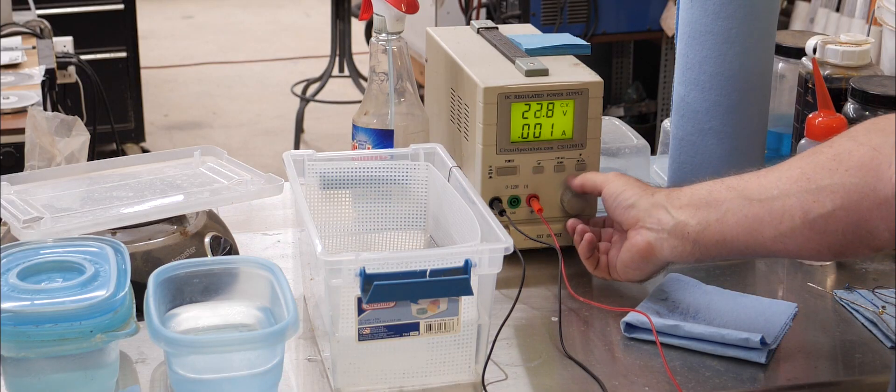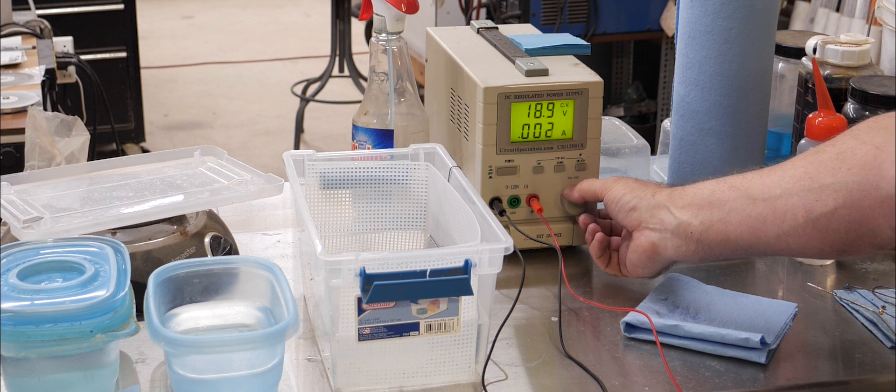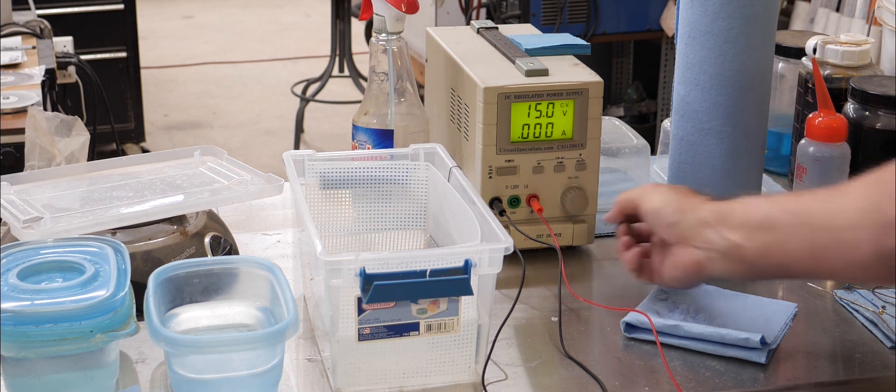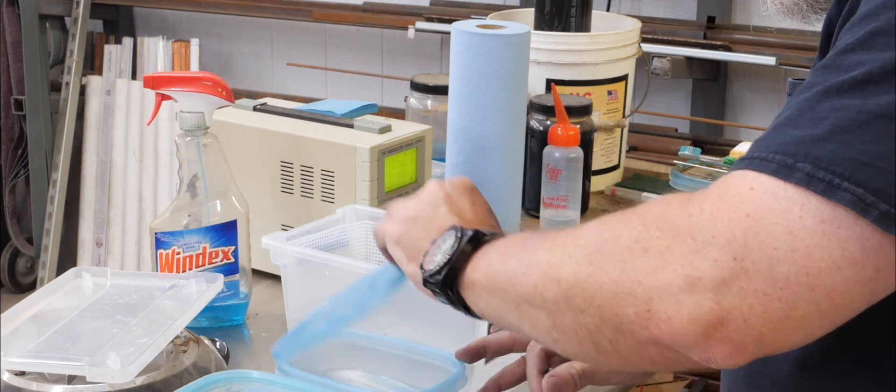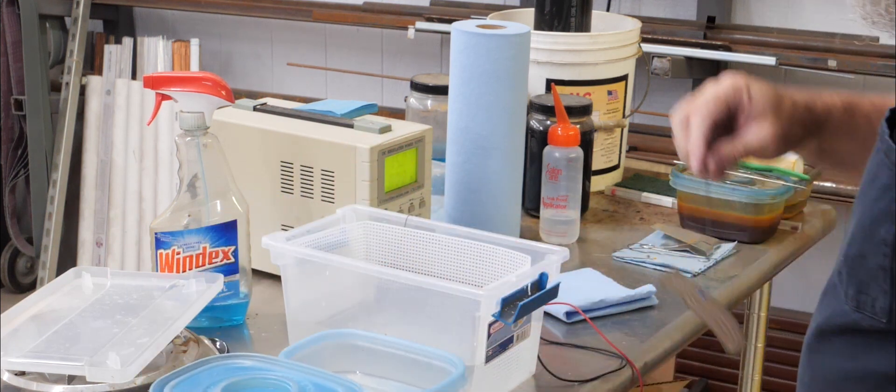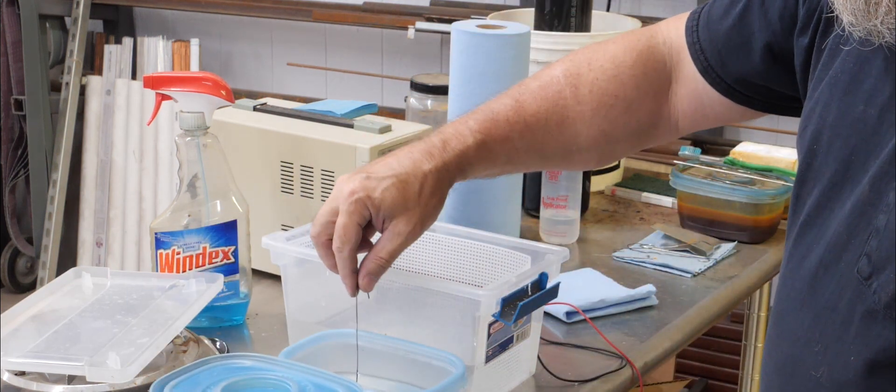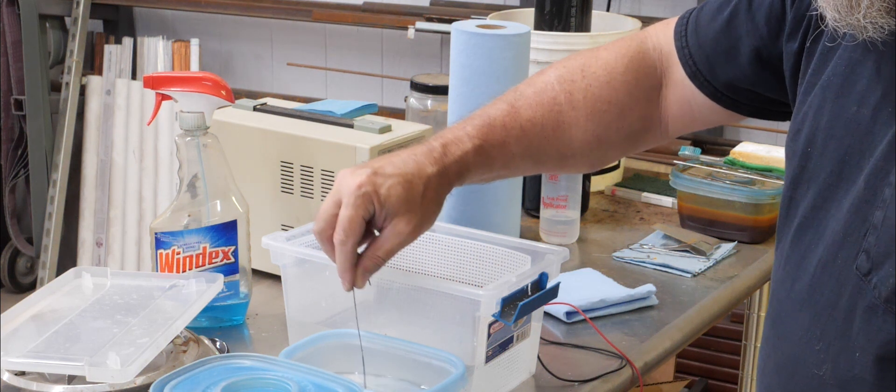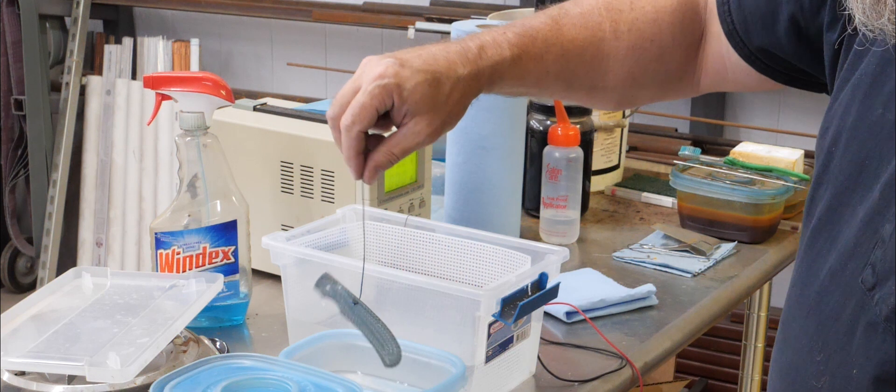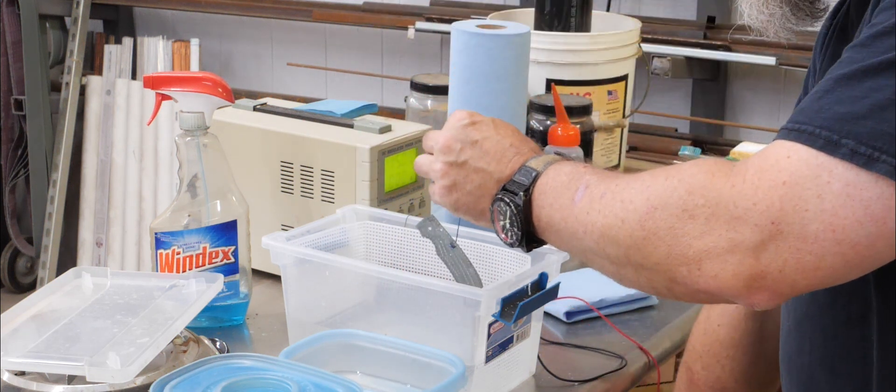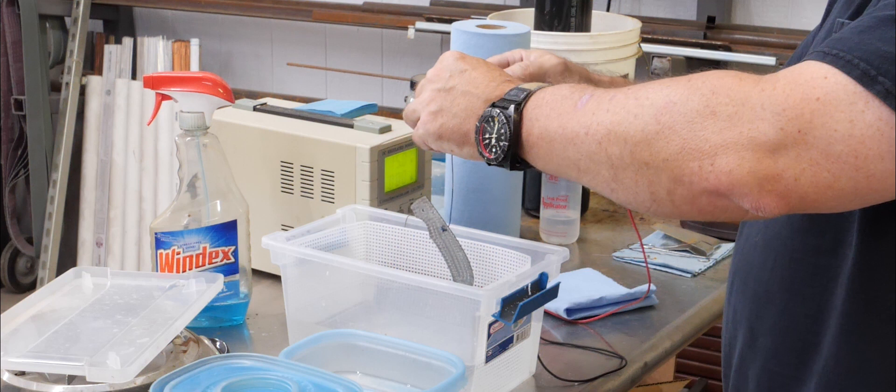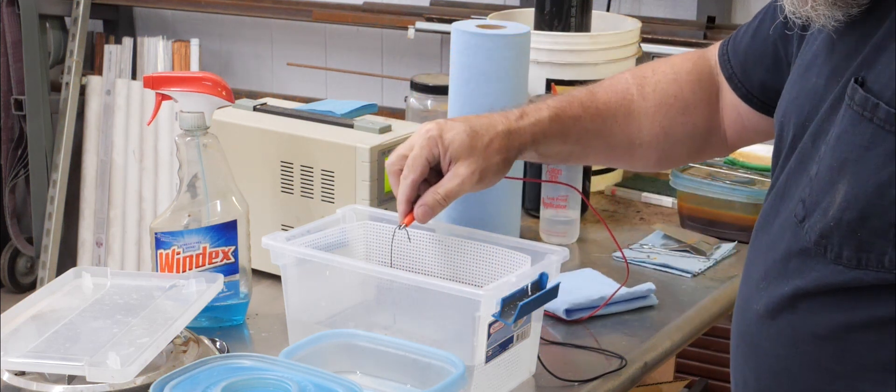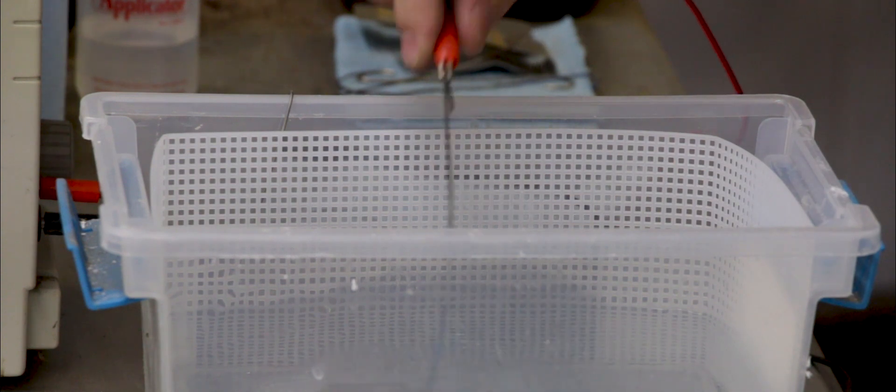I'm going to start out anodizing my favorite color to use on liners, which is a bronze, and that's achieved at about 15 volts. I start off just giving the liner a quick rinse in some distilled water and then it's ready to go into the electrolyte. I will connect the positive lead and then plunge it down into the electrolyte and the anodizing starts immediately.